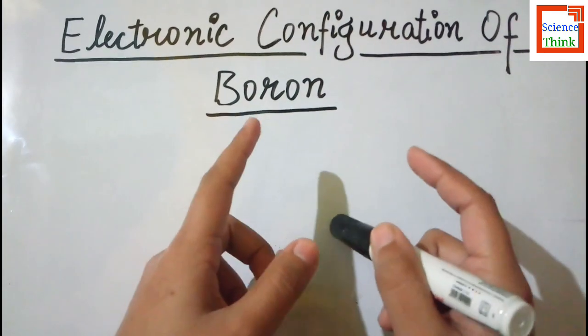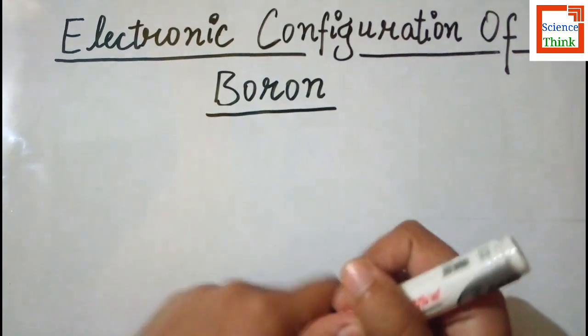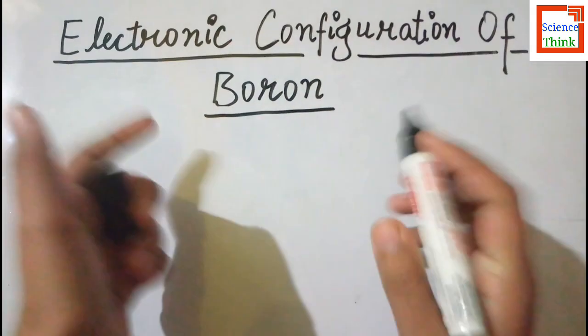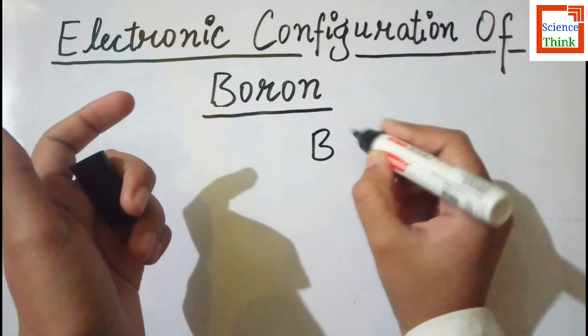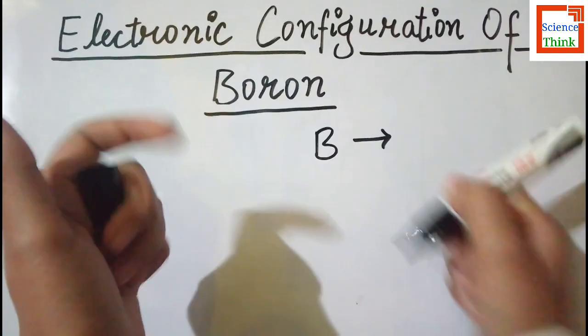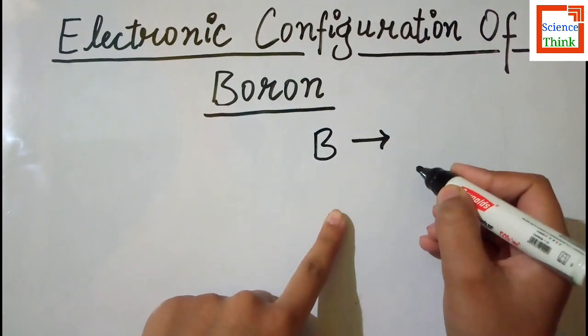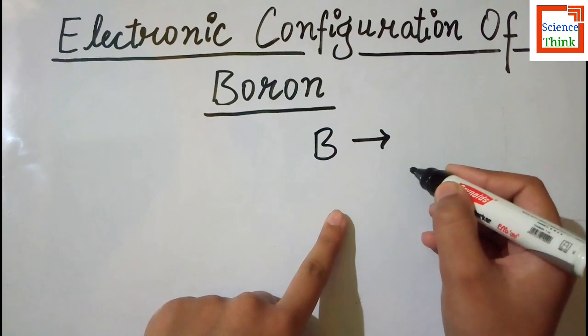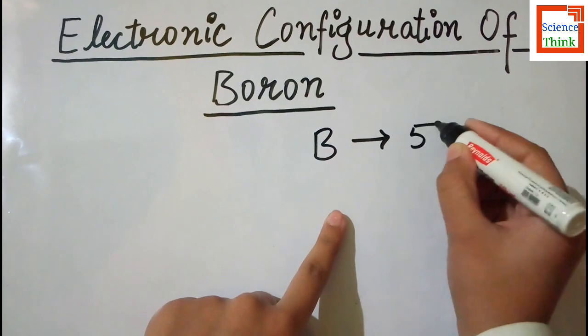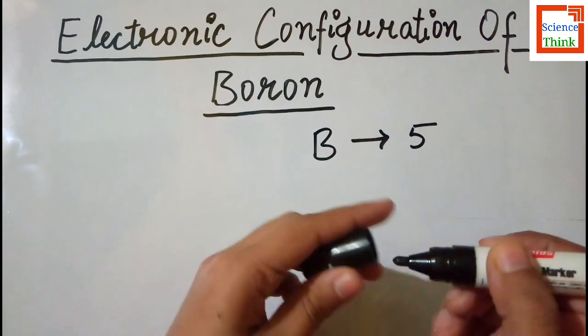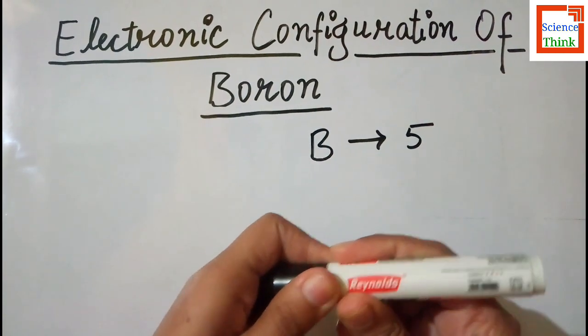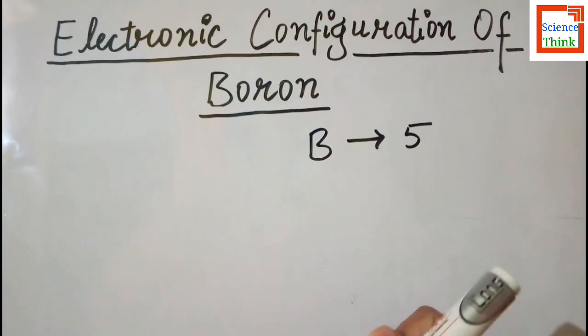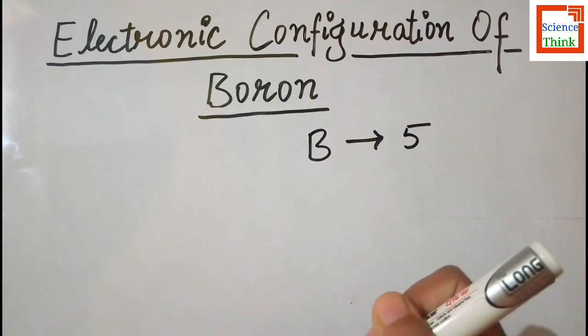In the periodic table we know boron, whose symbol is capital B, is at number 5. So the atomic number of boron is 5.